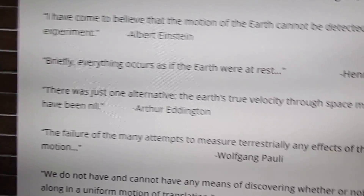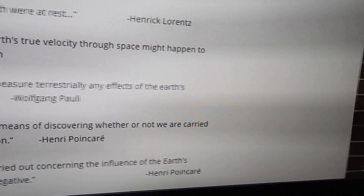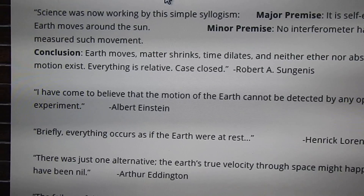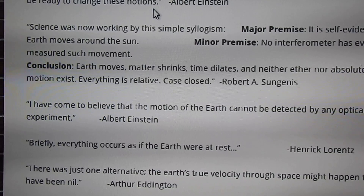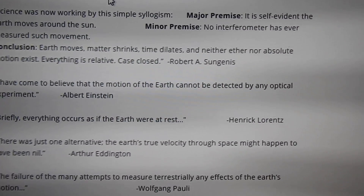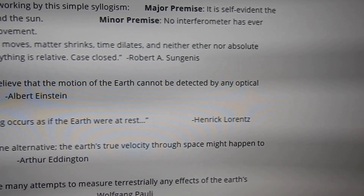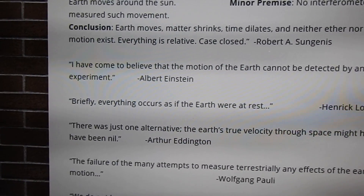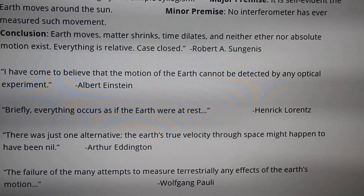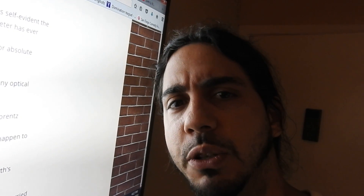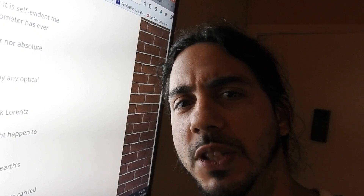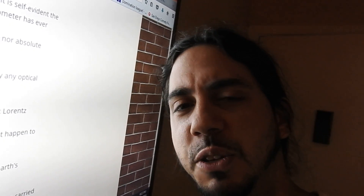Let's see what Einstein — the guy that Nassim Haramein tends to want to correct and ratify his mistakes — said: 'I have come to believe that the motion of the Earth cannot be detected by any optical experiment.' So if Einstein can't detect the motion of the Earth by any optical experiment, what machines do you use to test the motion of the Earth through space? And what other machines are you using to test the motion of the Sun flying through space?